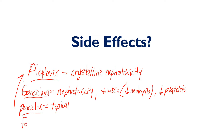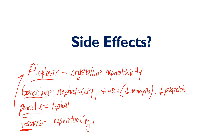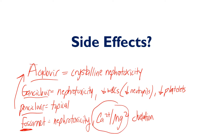Foscarnet — remember it's a pyrophosphate analog that directly inhibits viral DNA polymerase. The primary concern is nephrotoxicity, but not crystalline nephrotoxicity — that's reserved for acyclovir. Additionally, foscarnet causes calcium and magnesium chelation, meaning it lowers your calcium and magnesium levels by stealing them from bone. This can cause serious bone fragility and is heavily contraindicated in patients with osteoporosis.